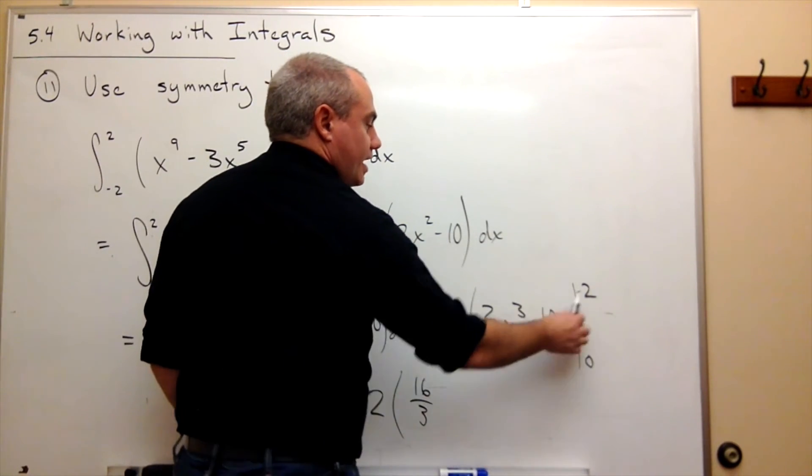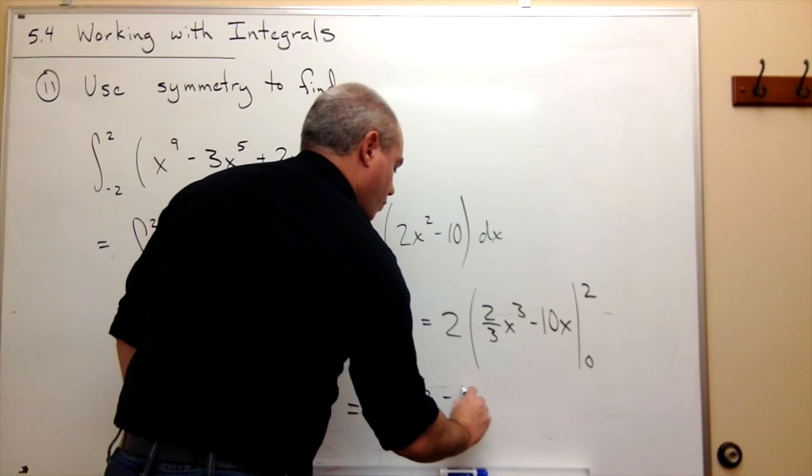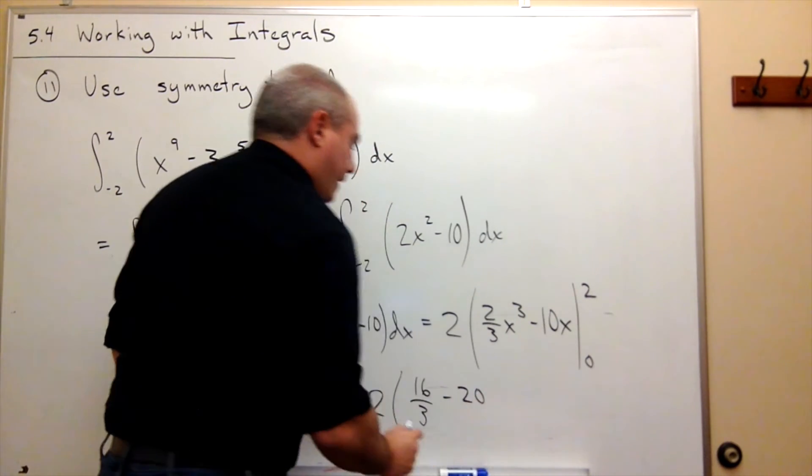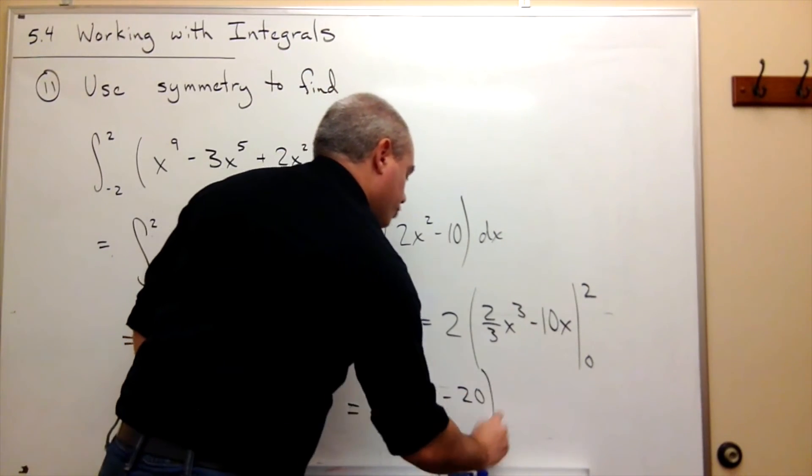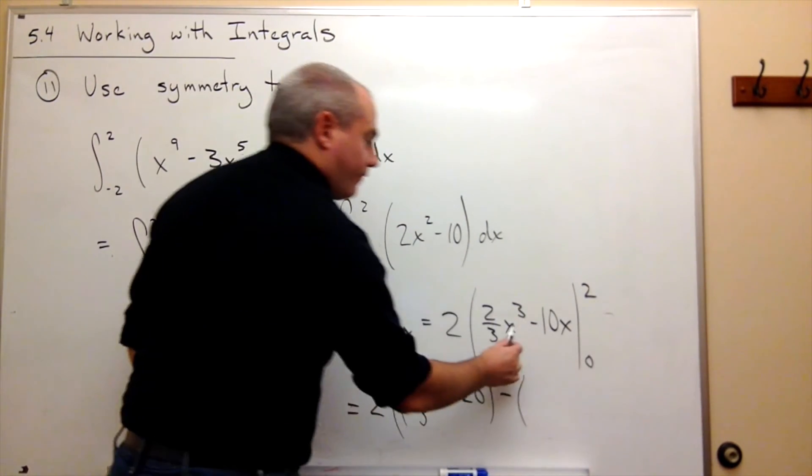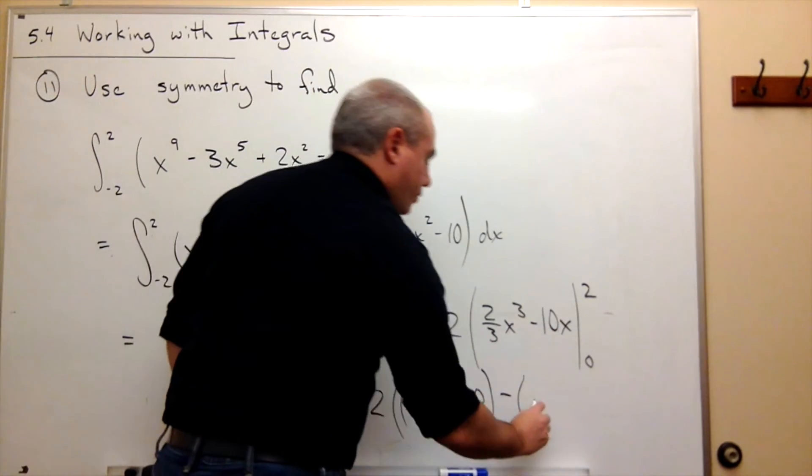And then I need minus 10 times 2, which is minus 20. And then I need to subtract plugging in 0. But if I plug in 0, I get 0 minus 0, which is just 0.